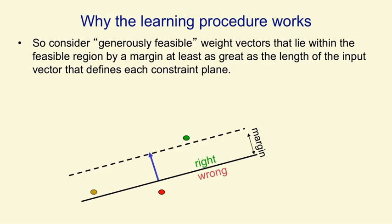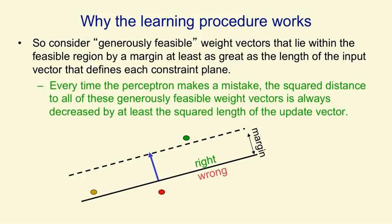What we're going to do is define a generously feasible weight vector — that's a weight vector that not only gets every training case right, but gets it right by at least a certain margin, where the margin is as big as the input vector for that training case. So we take the cone of feasible solutions, and inside that we have another cone of generously feasible solutions, which get everything right by at least the size of the input vector. Now our proof will work. We can make the claim that every time the perceptron makes a mistake, the squared distance to all of the generously feasible weight vectors will be decreased by at least the squared length of the input vector, which is the update we make.